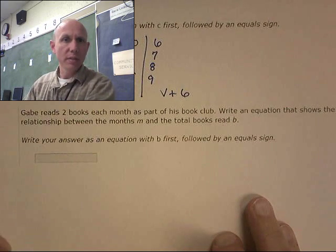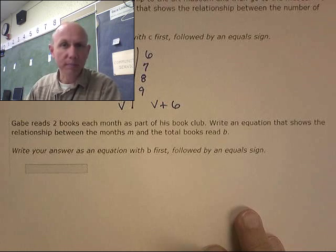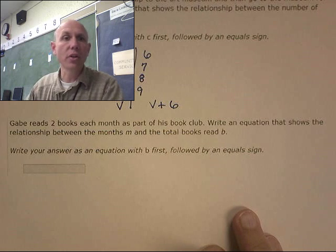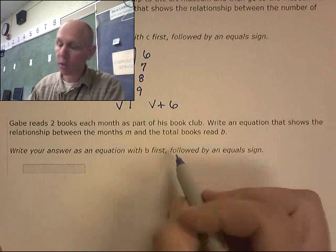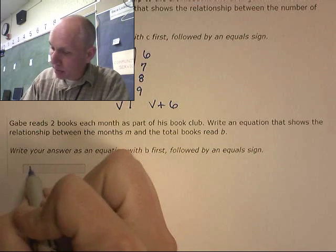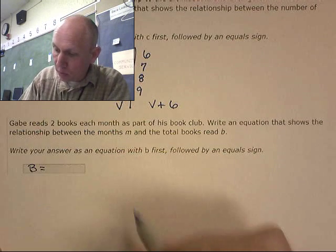Gabe reads two books each month as part of his book club. Write an equation that shows the relationship between the months M and the books B, and it's going to be a B equals. So the number of books equals something with months.